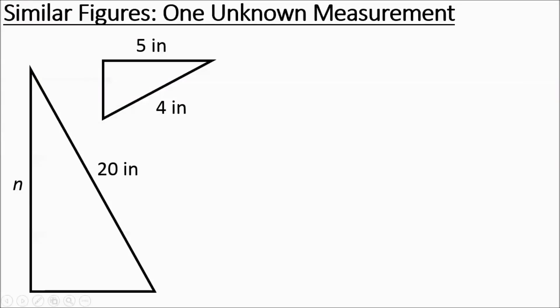Okay, so this is when you have two similar figures and they give you some measurements and you need to figure out the missing measurement. So they give us two triangles here and we're going to assume that they're similar. It doesn't say anything on here, but if they give you two and it's a problem like this, you can assume that they're going to be similar.